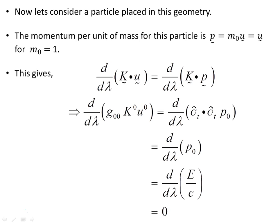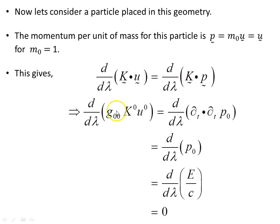Now let's consider a particle placed in this geometry, where the momentum per unit mass for this particle is p = m₀u = u, for m₀ = 1. This means we can write the Killing condition in this form, using the momentum vector per unit mass as the tangent vector u. Expanding that out, there's only one component in this four-dimensional vector on both sides.